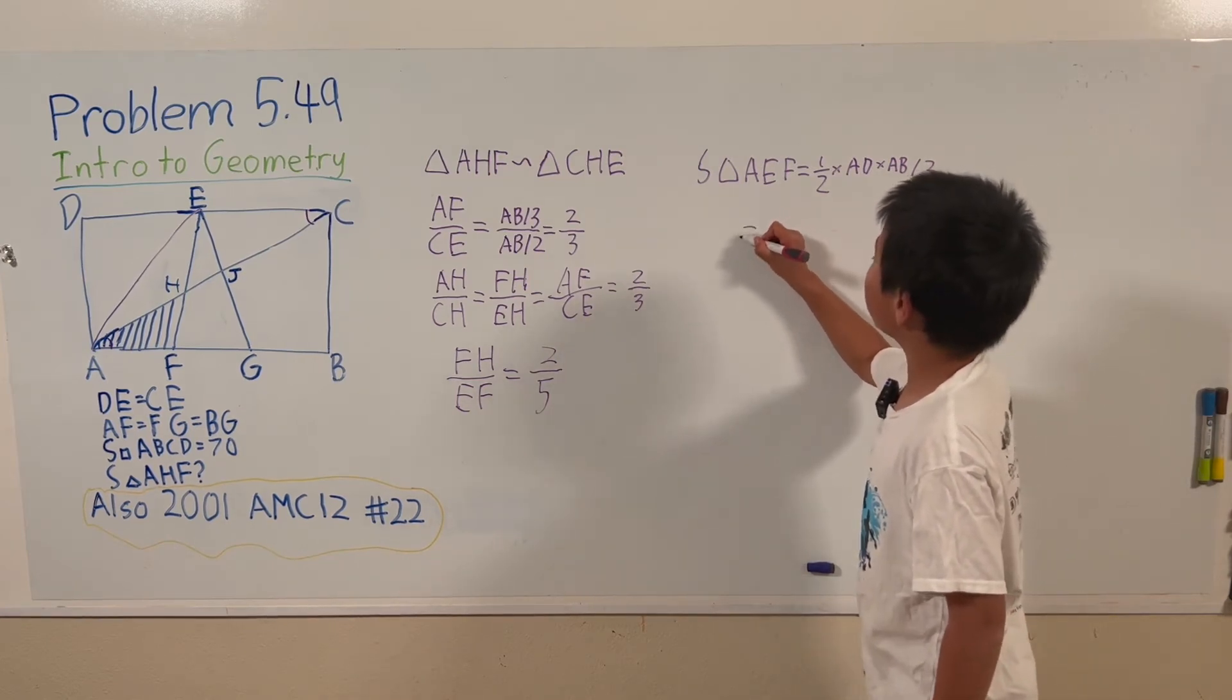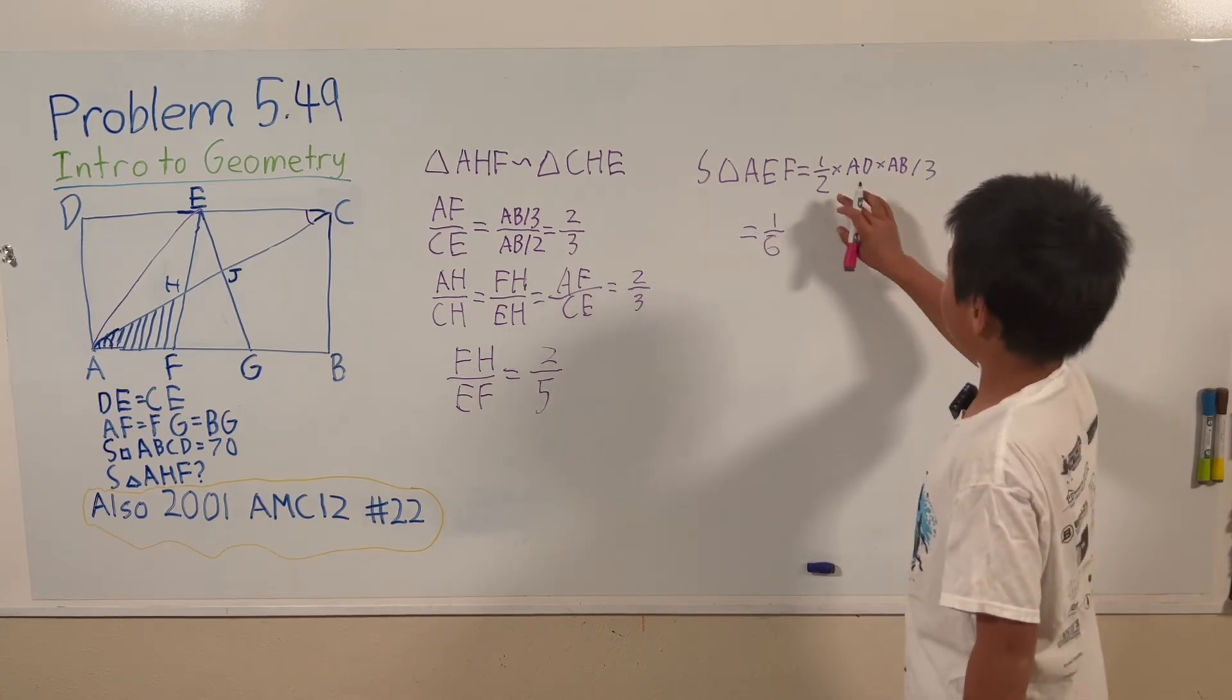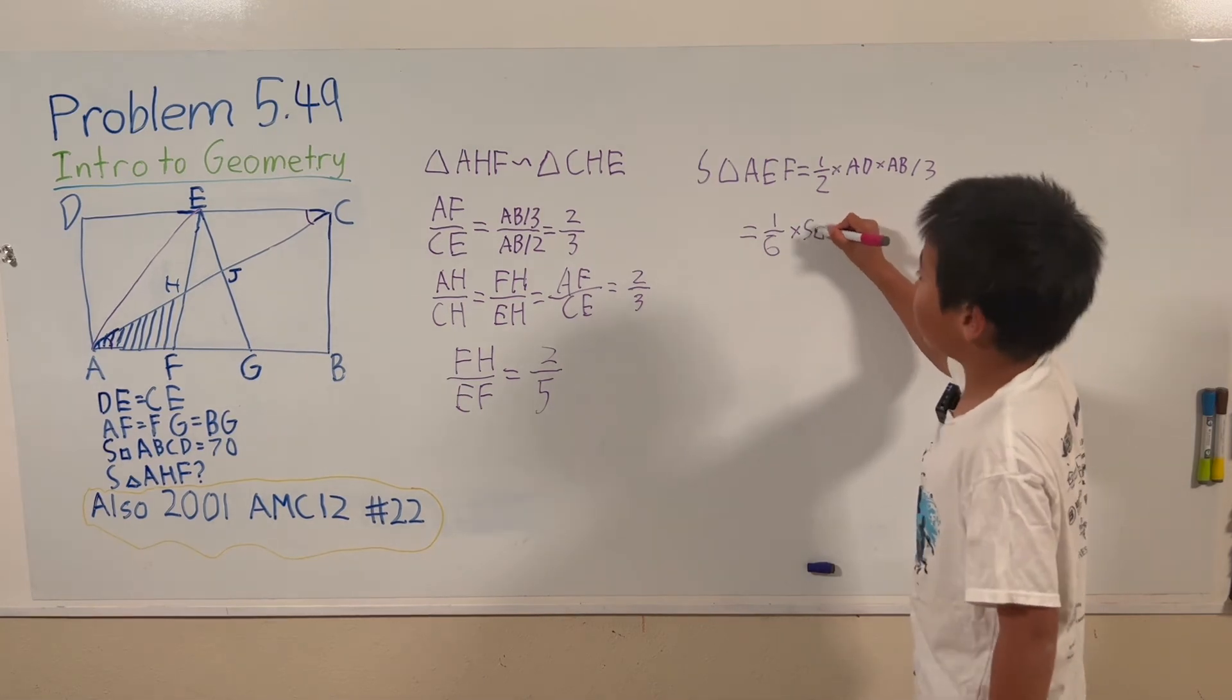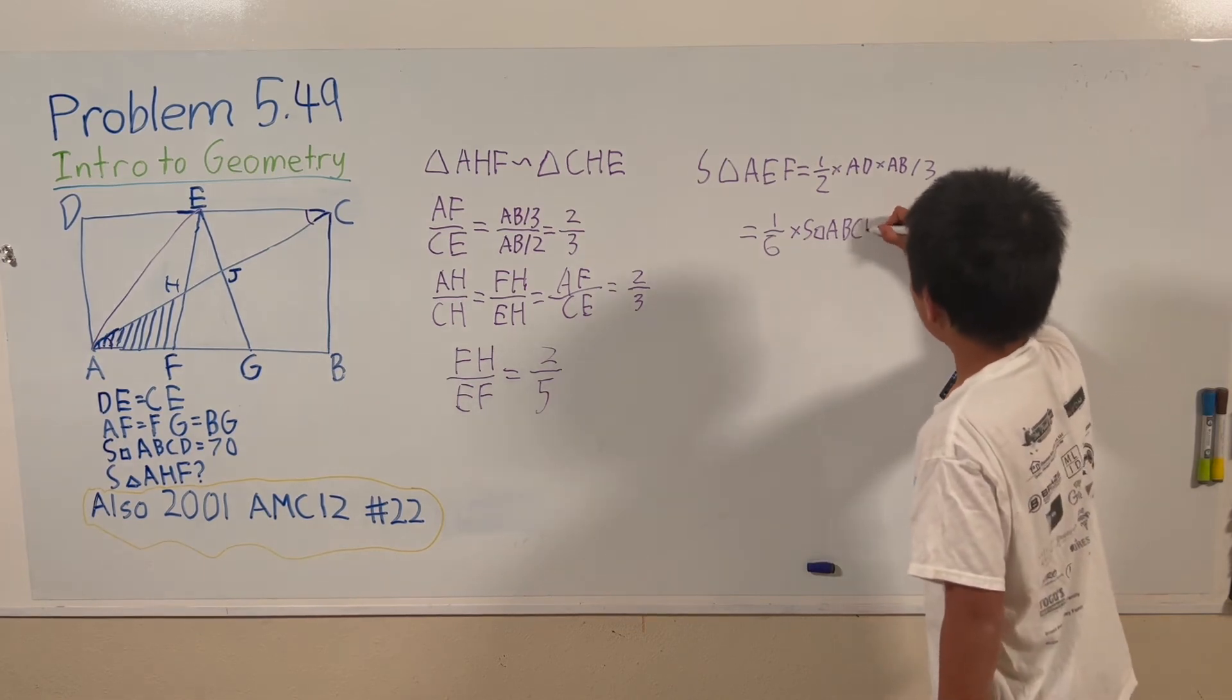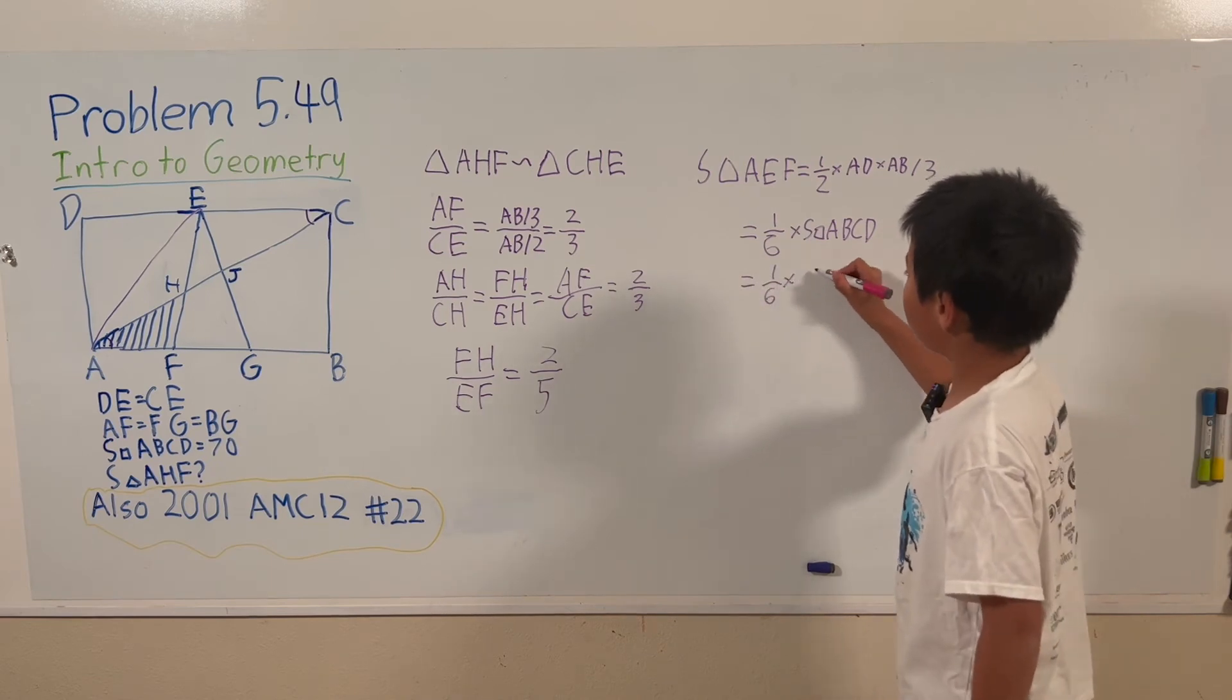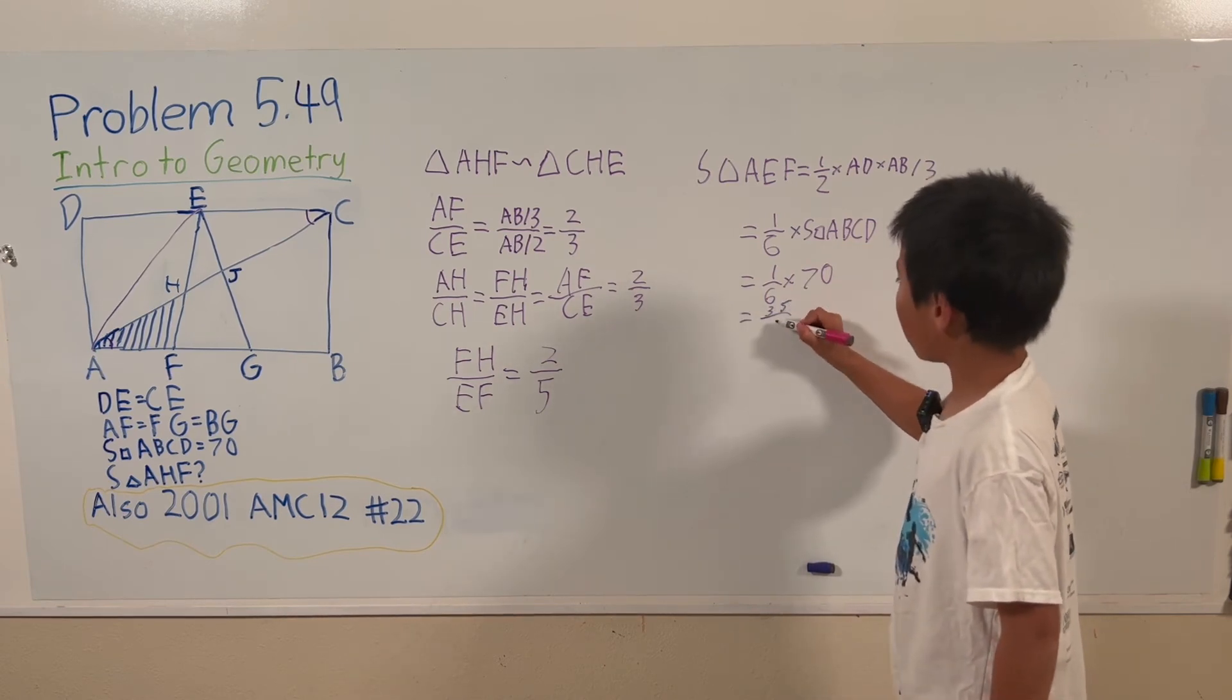So from here we know that this equals a third times a half equals a sixth times the area of rectangle ABCD and this equals a sixth times 70 equals 35 over 3.